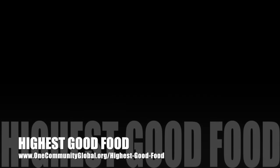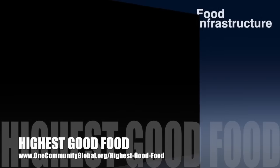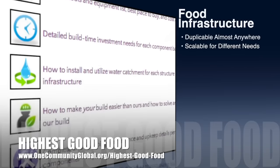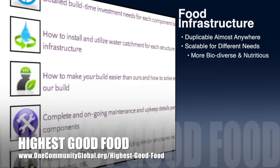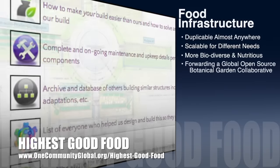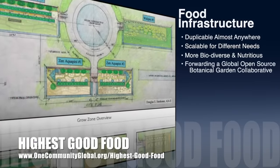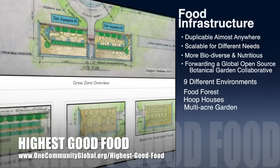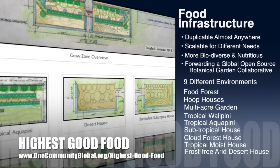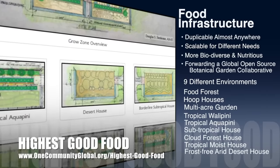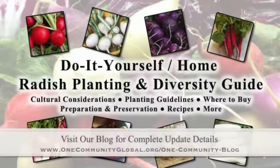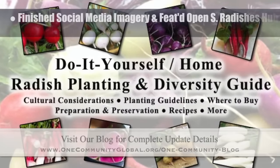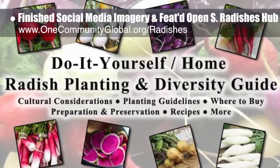One Community's approach to highest good food is duplicable almost anywhere, scalable for different needs, more biodiverse and nutritious, part of forwarding a global open source botanical garden collaborative, and includes nine different free shared and duplicable growing environments. This week the core team working on highest good food finished the final social media imagery and featured our open source radishes hub.